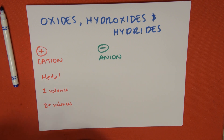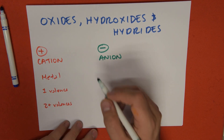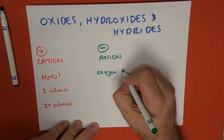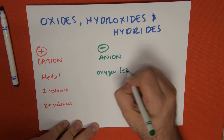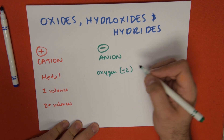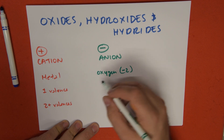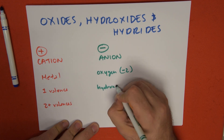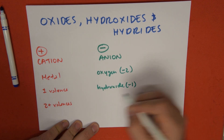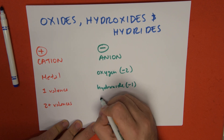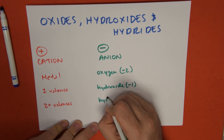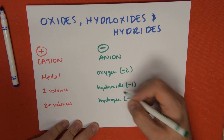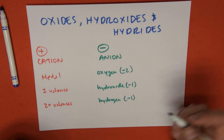And the anion, depending on the family, is going to be oxygen, which is invariably minus 2 in its charge. We're going to have hydroxide, which is invariably minus 1 in its charge. And we have hydrogen, which is always going to be negative 1 in its charge when it's acting as an anion.